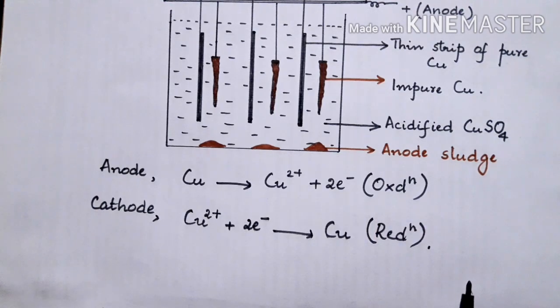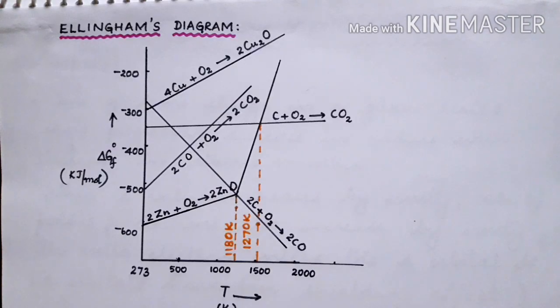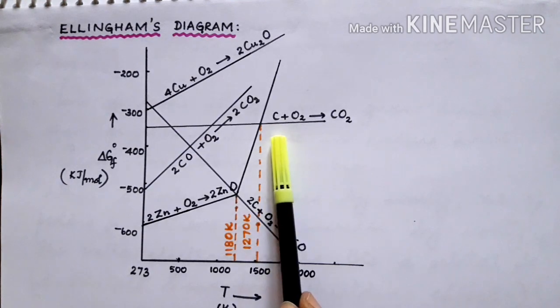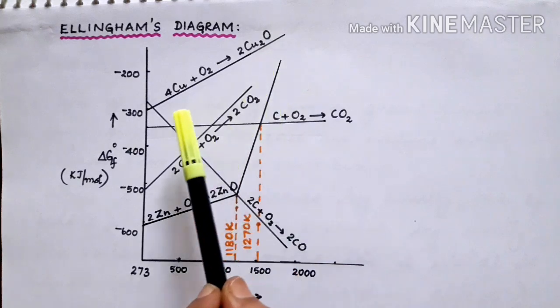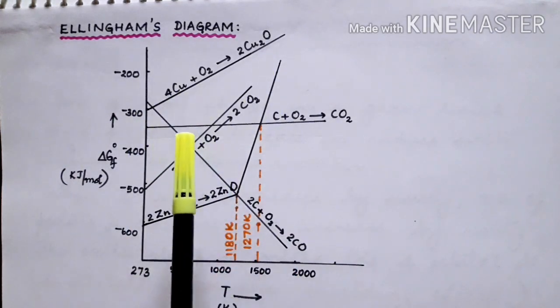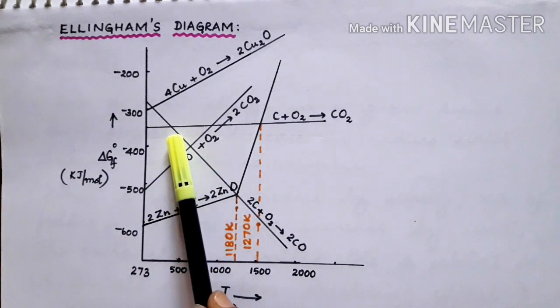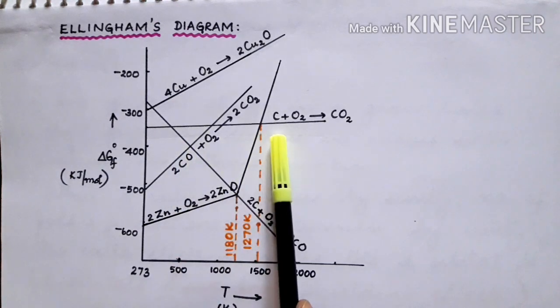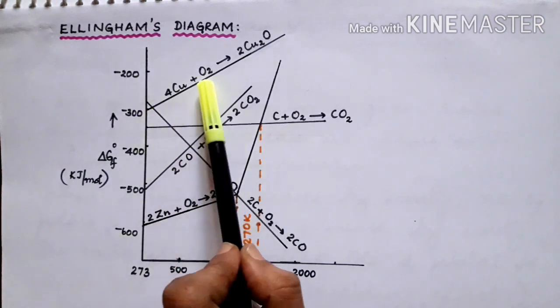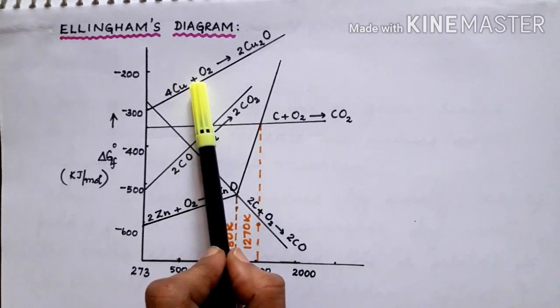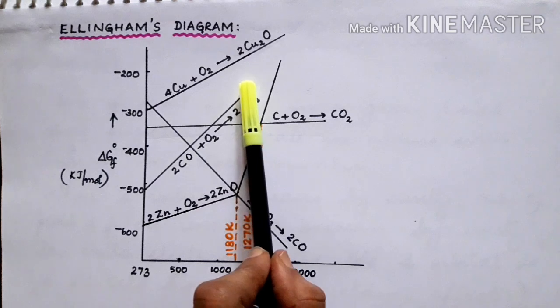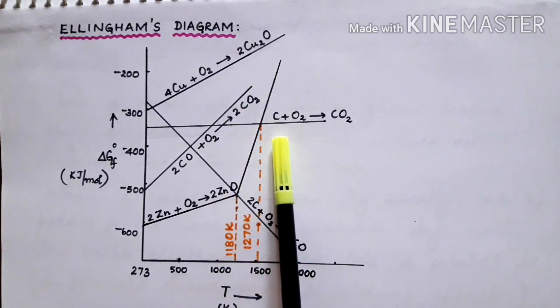Hope it is clear. Now, on examining the Ellingham's diagram for copper and carbon, one is able to understand that coke is having a lower line compared to that of copper. So we have learned in Ellingham's diagram the element which is well below the oxide will be able to reduce the metal oxide above it. So copper oxide can be reduced by carbon.